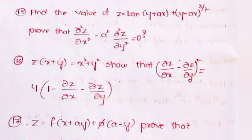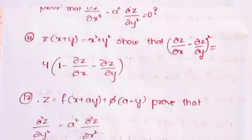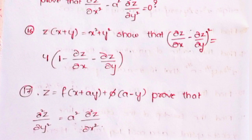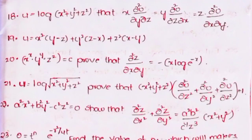Seventeenth, z = f(x + ay)·φ(a − y); prove that ∂²z/∂y² = a²·∂²z/∂x². Eighteenth, u = log(x² + y² + z²); show that x·∂²u/∂y∂z = y·∂²u/∂z∂x = z·∂²u/∂x∂y. Nineteenth, u = x²(y − z) + y²(z − x) + z²(x − y). Twentieth, x^x · y^y · z^z = c; prove that ∂²z/∂x∂y = −(x·log(ex))⁻¹. Twenty-first, u = log√(x² + y² + z²); prove that (x² + y² + z²)(∂²u/∂x² + ∂²u/∂y² + ∂²u/∂z²) = 1.